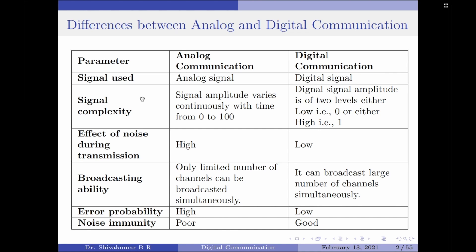Analog signals are highly complex because the signal amplitude varies continuously with time, from 0 to 100. On the other hand, digital signal amplitude is of two levels — either low, that is zero, or either high, that is one.